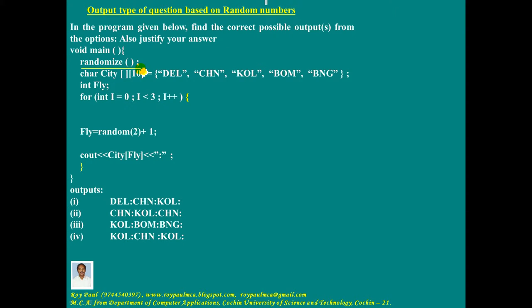The first line in the main function is randomize. Randomize is given for the proper working of the random function. Because of randomize, the random function will generate random numbers properly.